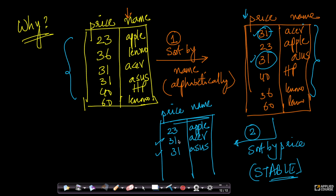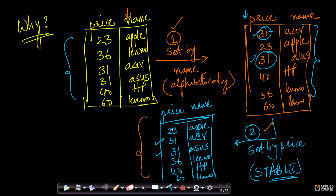The rest of the output is $36 Lenovo, $40 HP, and $60 Lenovo. The final result is sorted by price, but for items with the same price, they are also sorted by name — because we first sorted by name, and then applied a stable sort by price, which preserved that name order for same-price items.